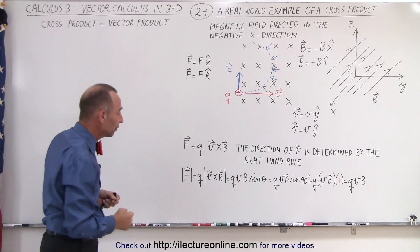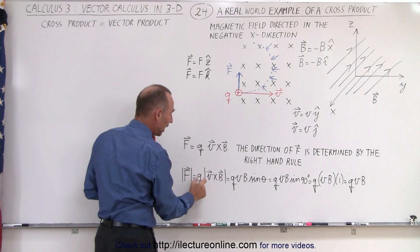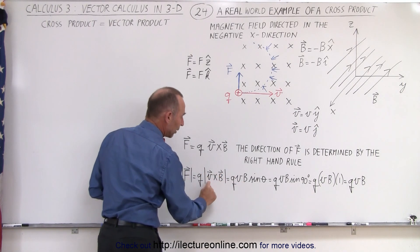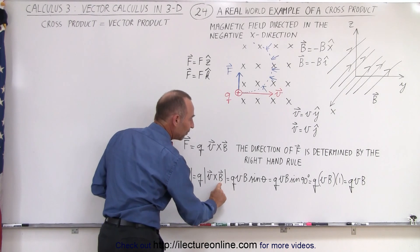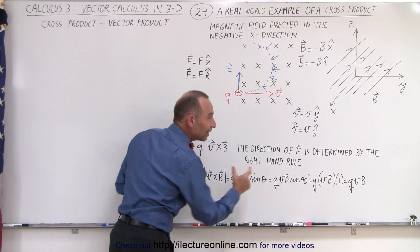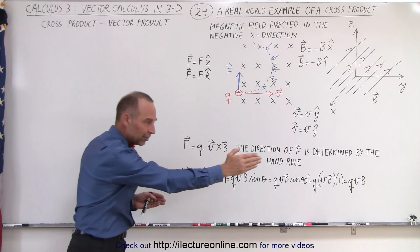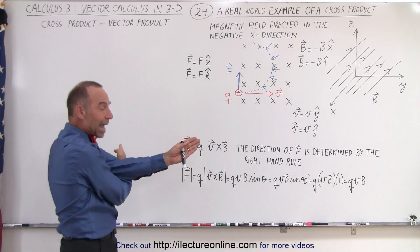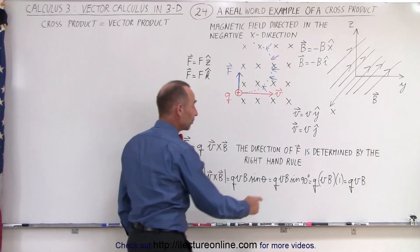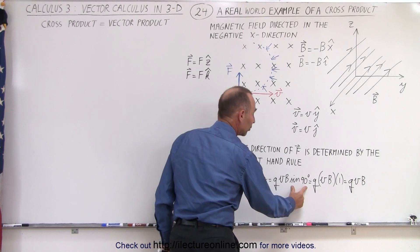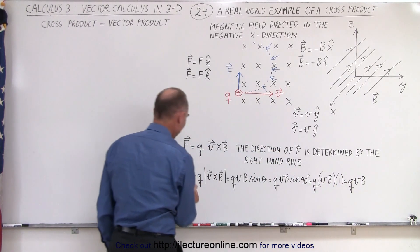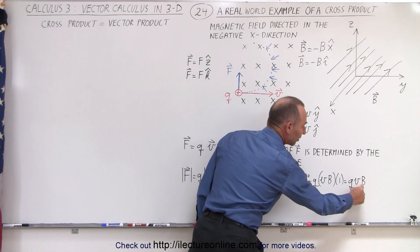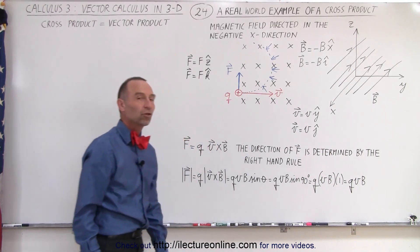The magnitude of the force can be found by taking the charge and multiplying times the magnitude of the cross product, which is V times B — the magnitude of the velocity times the magnitude of the magnetic field — times the sine of the angle between the two. We have the velocity in the y-direction and the magnetic field in the negative x-direction, which means the angle between them is 90 degrees. So it becomes VB times sine of 90 degrees, which equals 1, so the magnitude of the force is simply QVB.